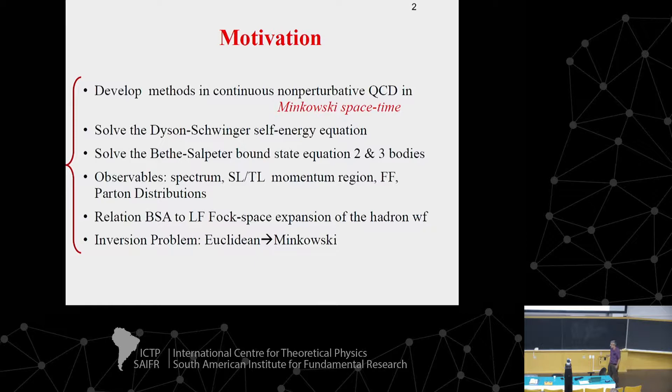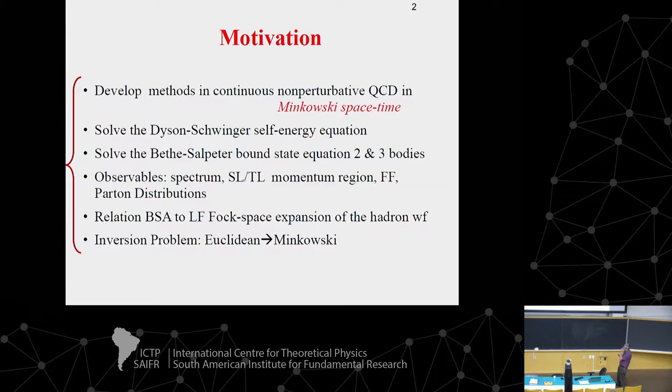So far, what we have seen is calculations in Euclidean space. Observables like parton distributions are intrinsically defined in Minkowski space, and we need that. The idea of this effort is to work directly in Minkowski space using Schwinger-Dyson and Bethe-Salpeter equations for two and three bodies. With that, we can go to parton distributions — space-like and time-like observables — and relate to the light-front Fock space decomposition.